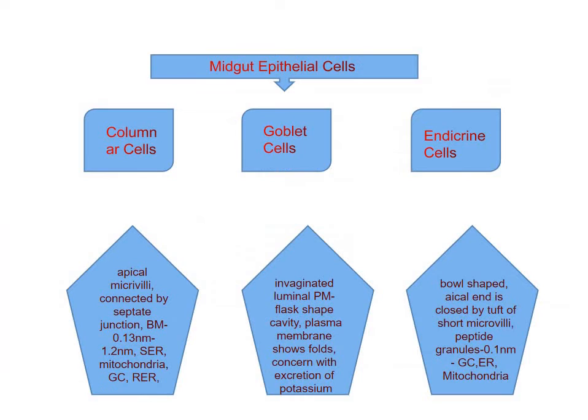In the previous lecture we already discussed the foregut and midgut, and the histological plan of foregut and midgut. Now, the midgut cells — histologically the midgut epithelial cells — consist of three kinds of cells: columnar epithelial cells, goblet cells, and endocrine cells. All these cells have different functions in the midgut of insects.